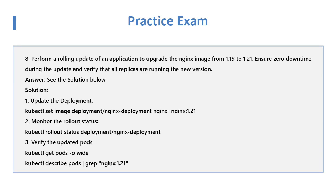Question 8: Perform a rolling update of an application to upgrade the Nginx image from 1.19 to 1.21. Ensure zero downtime during the update and verify that all replicas are running the new version. Solution: Update the deployment with 'kubectl set image deployment/nginx-deployment nginx=nginx:1.21'. Monitor the rollout status using 'kubectl rollout status deployment/nginx-deployment'. Verify the updated pods with 'kubectl get pods -o wide' and 'kubectl describe pods | grep nginx:1.21'.